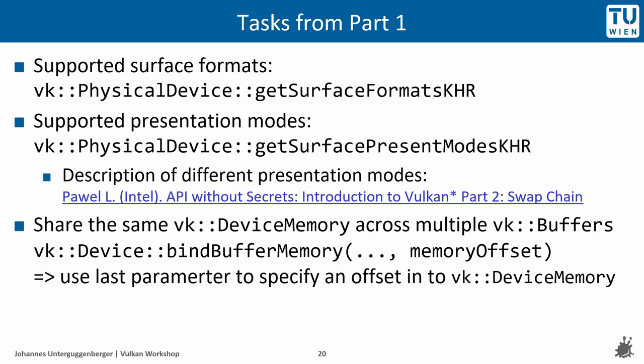I assume there are no big hurdles with the first few tasks. Supported surface formats can be queried using vkGetSurfaceFormatsKHR. Supported presentation modes can be queried with vkGetSurfacePresentModesKHR. For a good description about the different presentation modes, I recommend the article 'API without Secrets: Introduction to Vulkan Part 2 - Swap Chain' published by Intel. Sharing the same device memory across multiple buffers can be achieved by allocating a big enough memory and setting the right memory offsets to the last parameter of vkBindBufferMemory.